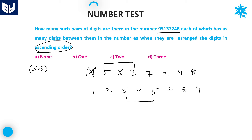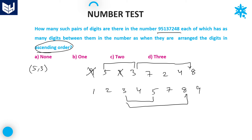Next, 3 and 7 — 0 here, but 2 in ascending — no. 3 and 2 — no. 3 and 4 — no. 3 and 8 — 3 digits here, and also 3 in ascending — very good, that is 1 pair. So 3 and 8 satisfies the condition of 3 digits between them.